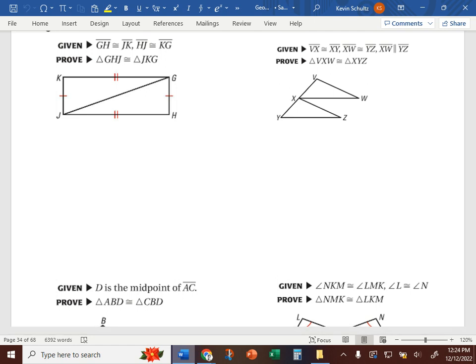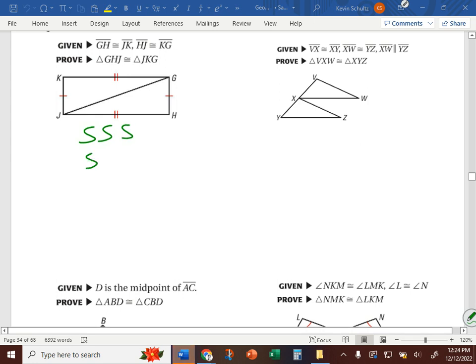Remember what we're looking for. Our proof has to end with one of these five things: side side side, side angle side, angle angle side, angle side angle, or HL.